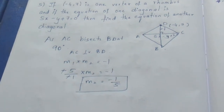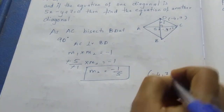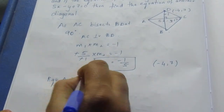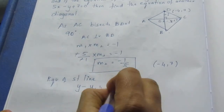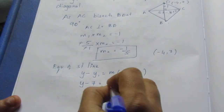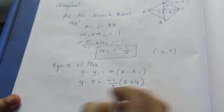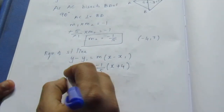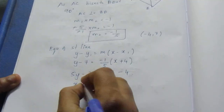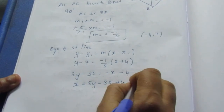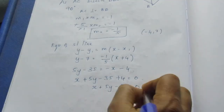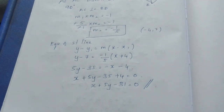Using the point-slope form, the equation of the other diagonal passing through (-4, 7) with slope minus 1 by 5 is: y minus 7 equals minus 1 by 5 times (x plus 4). Multiplying through by 5: 5y minus 35 equals minus x minus 4, giving x plus 5y minus 31 equals 0. This is the required equation of the other diagonal.